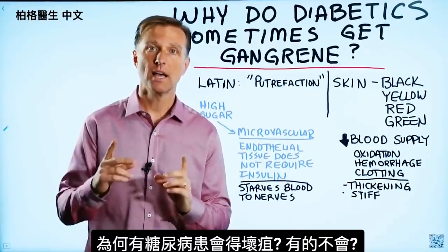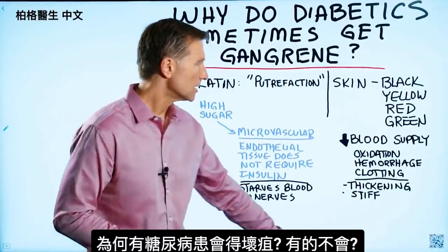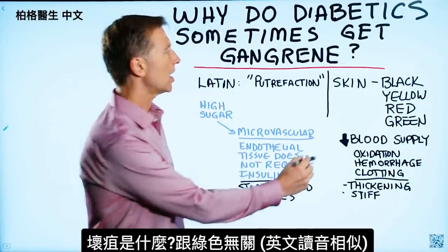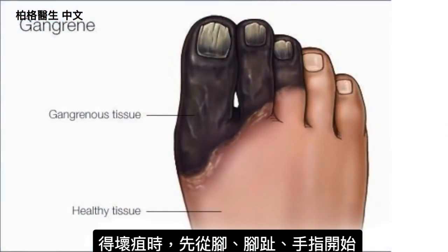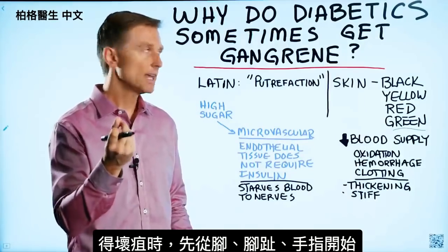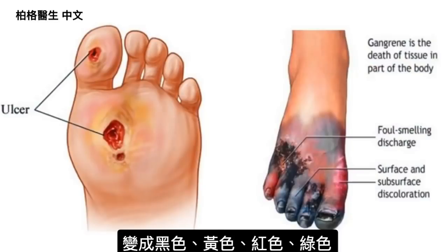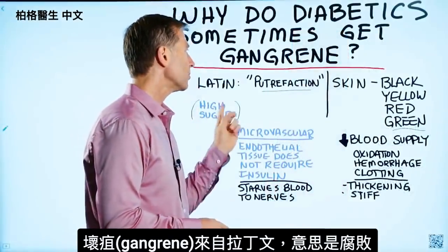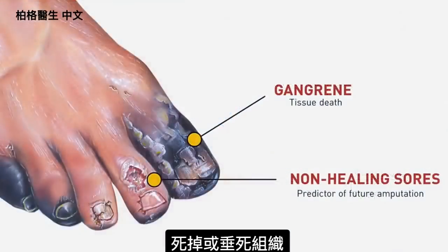Let's talk about why some diabetics get gangrene and others don't. First of all, what is gangrene? It really has nothing to do with the color green, but when you get gangrene, the tissue — usually in the feet or the toes first, and sometimes in the hands — starts turning black, yellow, red, and even kind of a shade of green. The actual word gangrene comes from the Latin word which means putrefaction: dead or dying tissue.